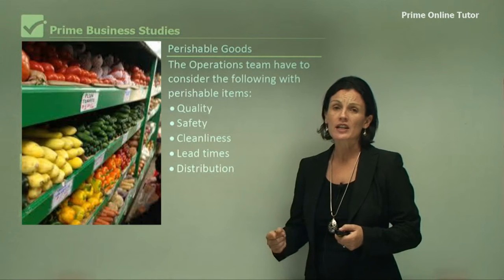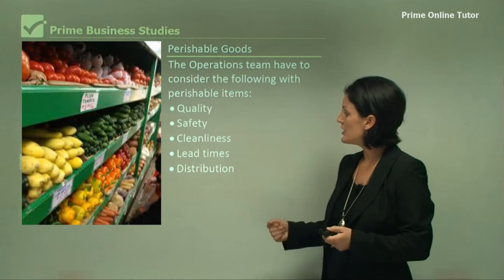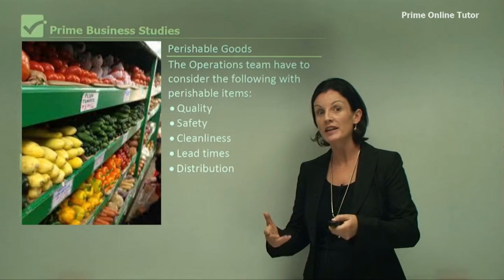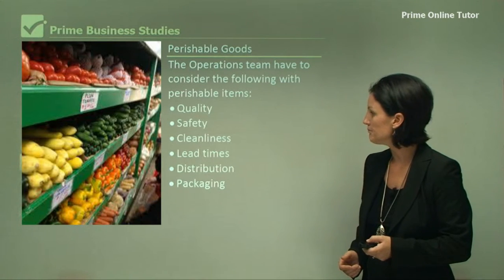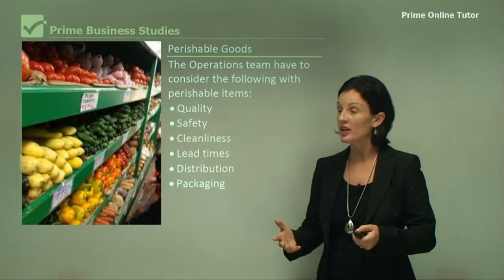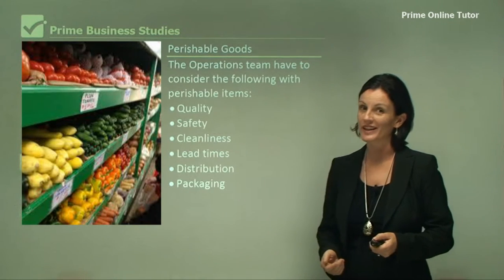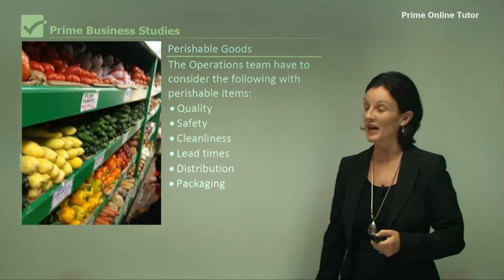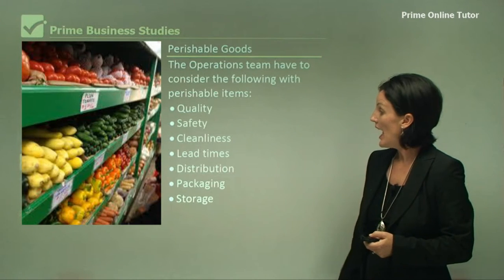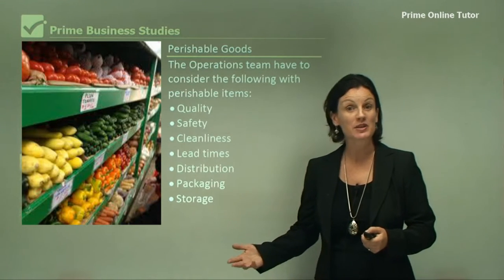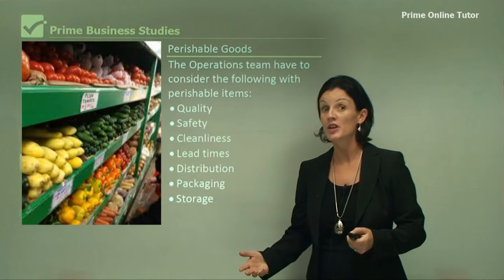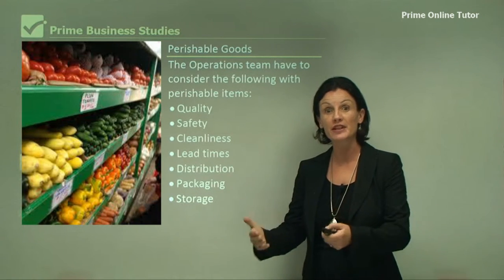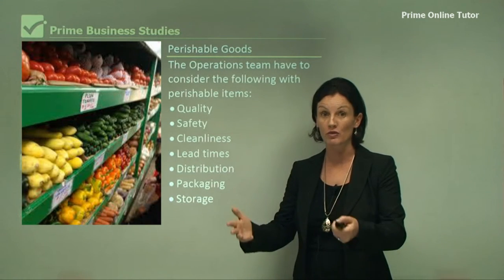Distribution is very important — this covers how goods are going to be delivered, at what time, how many, etc. Packaging also comes back to quality: if the packaging is not secure, the product could become damaged. Finally, perishable goods need to be stored properly. Some perishable items need to be stored in cool places, so the business will have to invest money on refrigeration, for example.